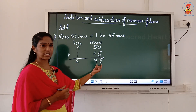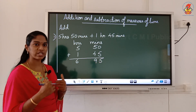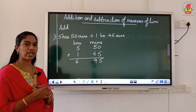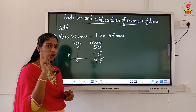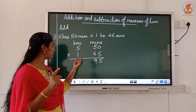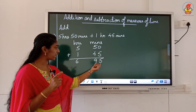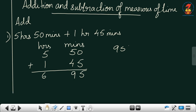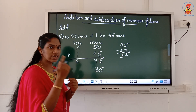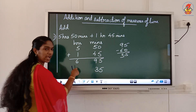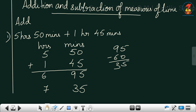I have 95 minutes. From this 95 minutes I am going to take away 60 minutes. Why? Because 60 minutes is 1 hour. So that 60 minutes I take to the hours column. 95 minus 60 leaves 35 minutes, and that 1 hour I add to the 6. So I get 7 hours 35 minutes. My final answer is 7 hours 35 minutes.